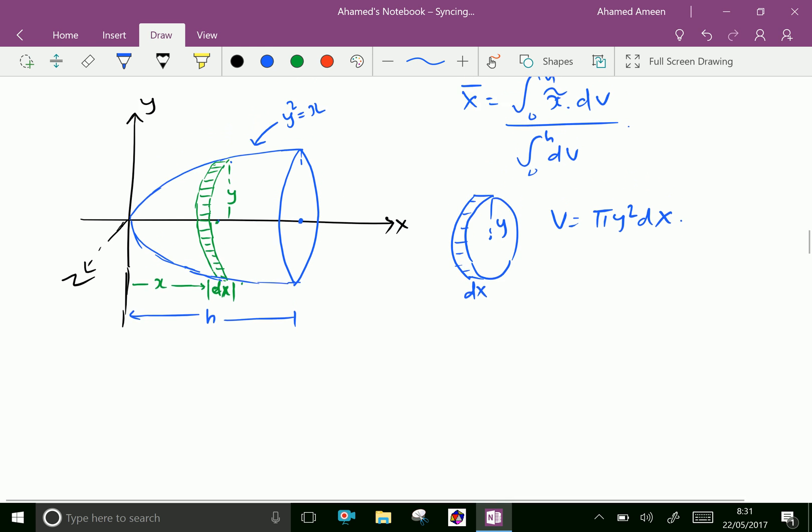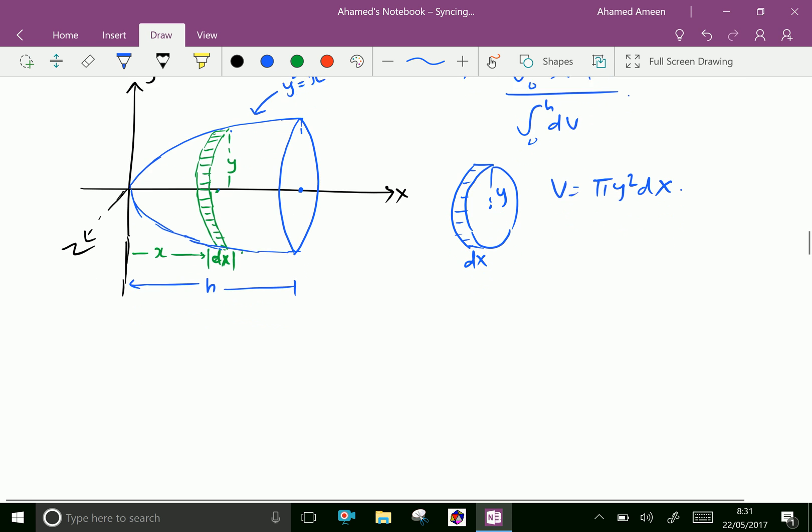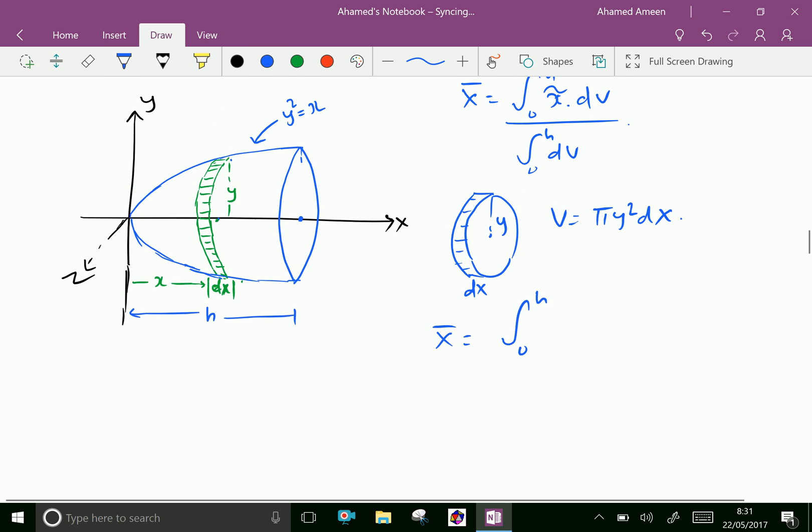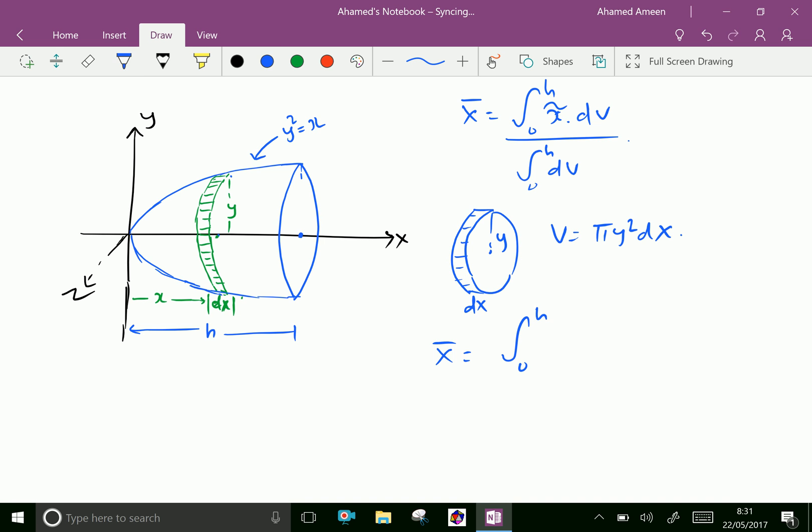Now substitute these values into x̄. That is, x̄ equals integral from 0 to h, where x̄ for the strip is equivalent to x because this small strip is at distance x from the origin of the figure.